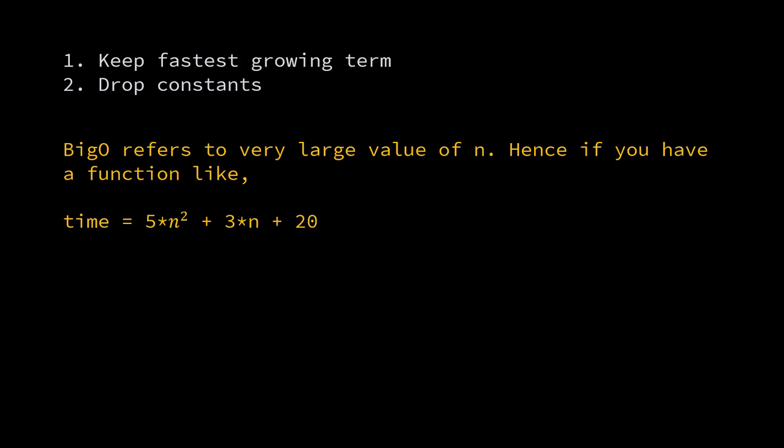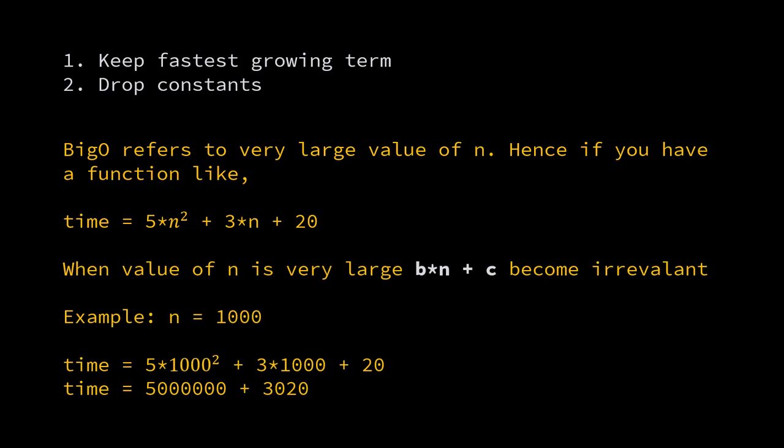Now Big O is a very rough ballpark estimate. It refers to the value of n which is very large. I'm not going for any large value here, but let's say even if n value is 1000, in that case in this equation the first term will contribute the most. It will be 5 million, whereas the second and third term will come around 3020.